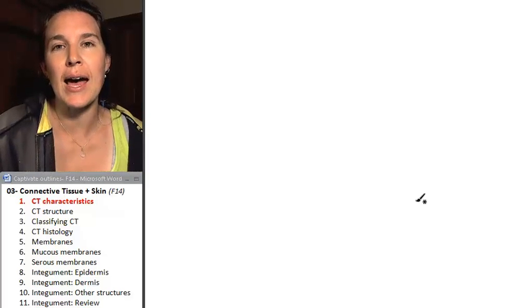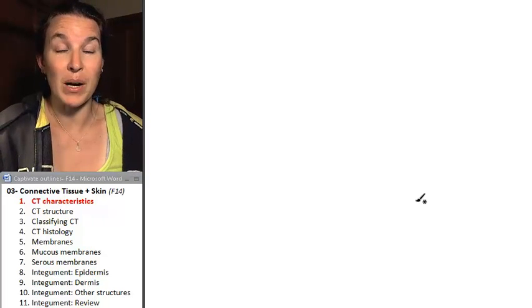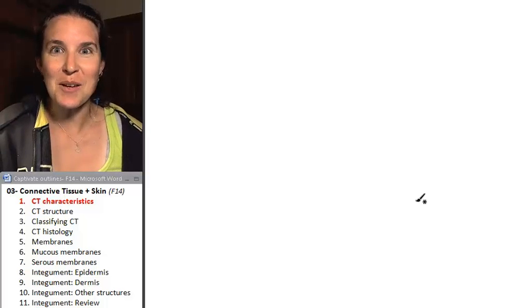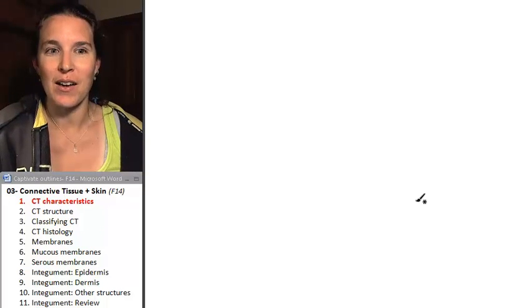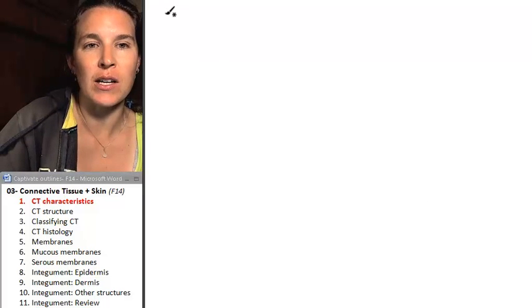We're also going to look at the integumentary system, which is our first body system. And the integumentary system is actually a membrane, which is one of the reasons why we're talking about it today. So let's start out this lecture with a definition of connective tissue.